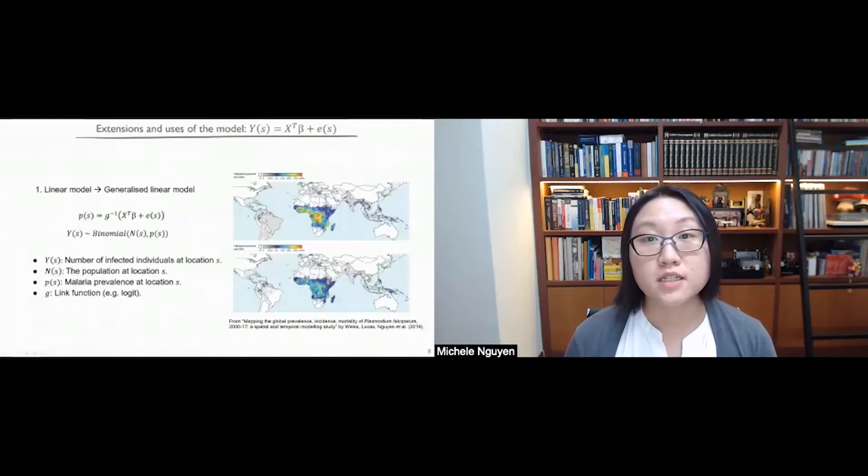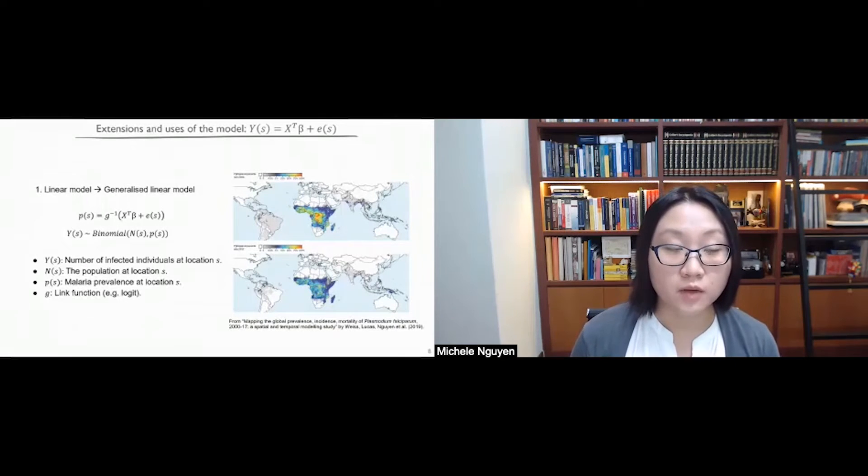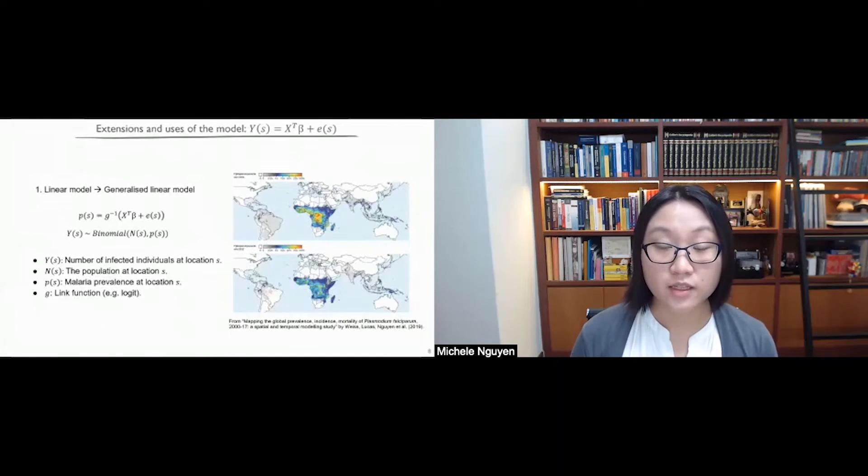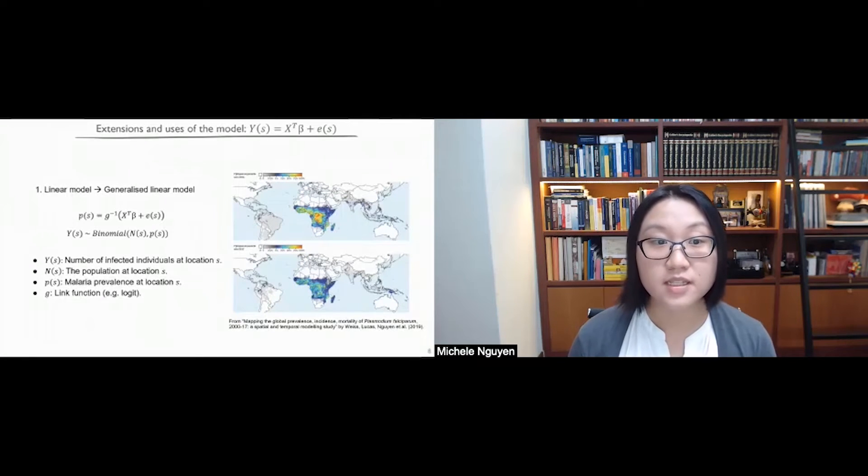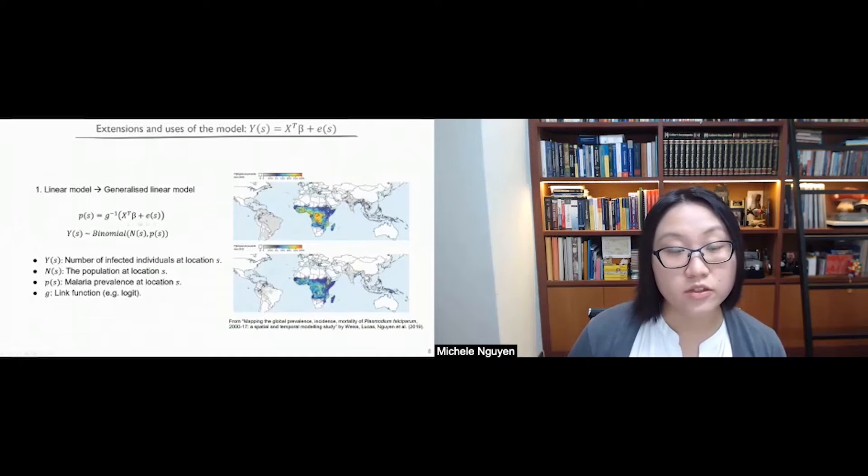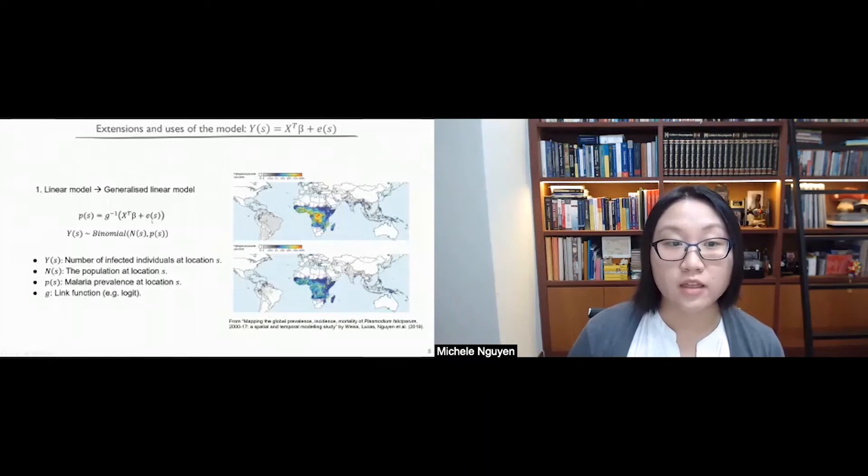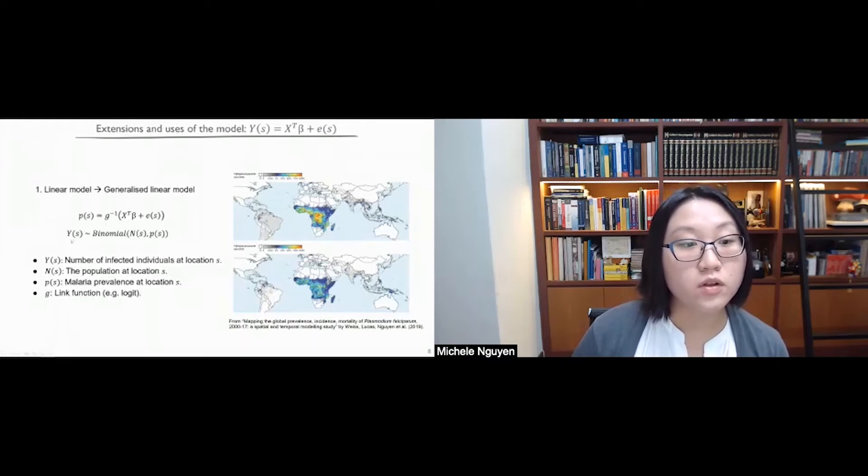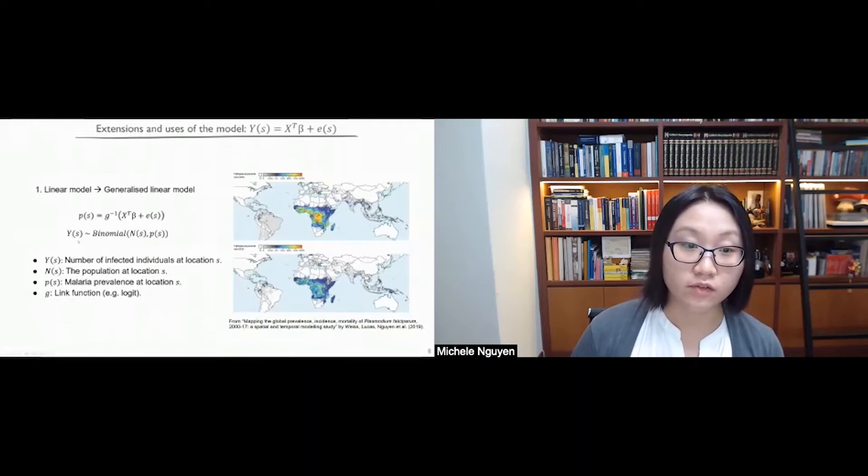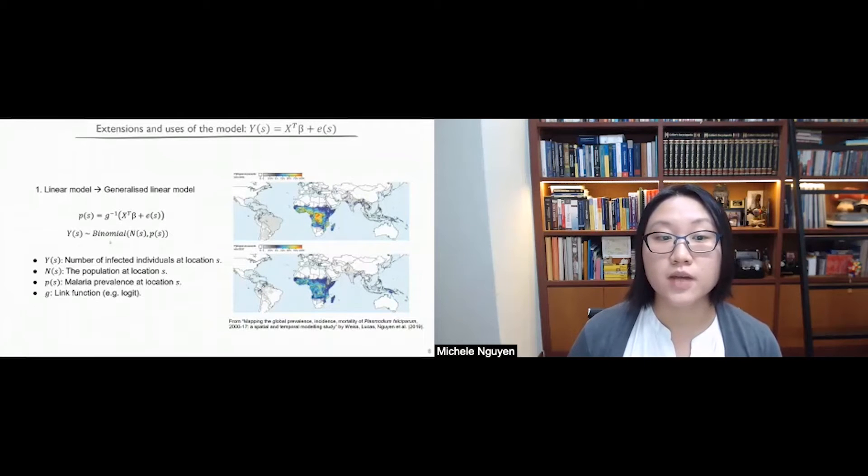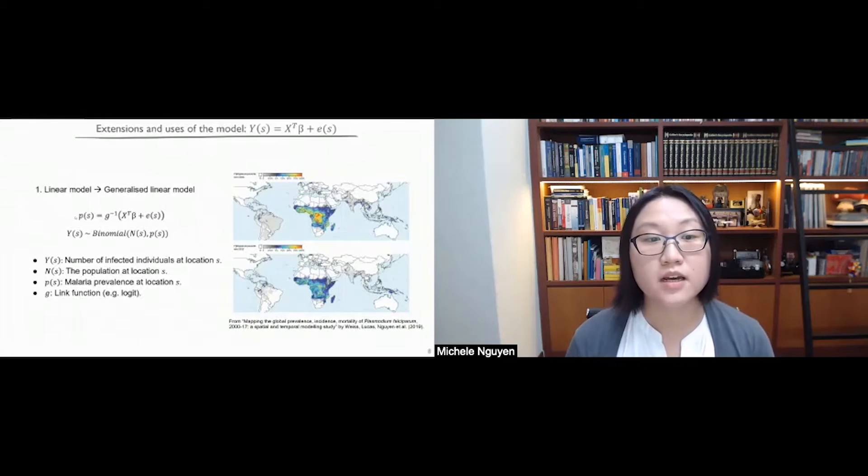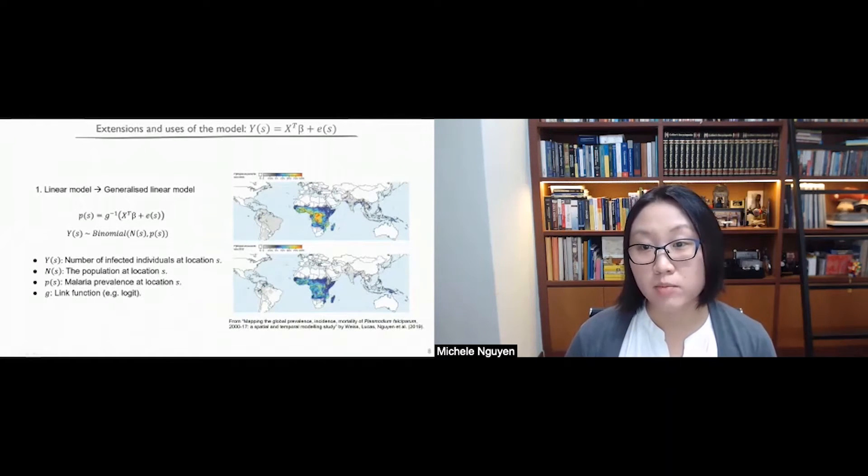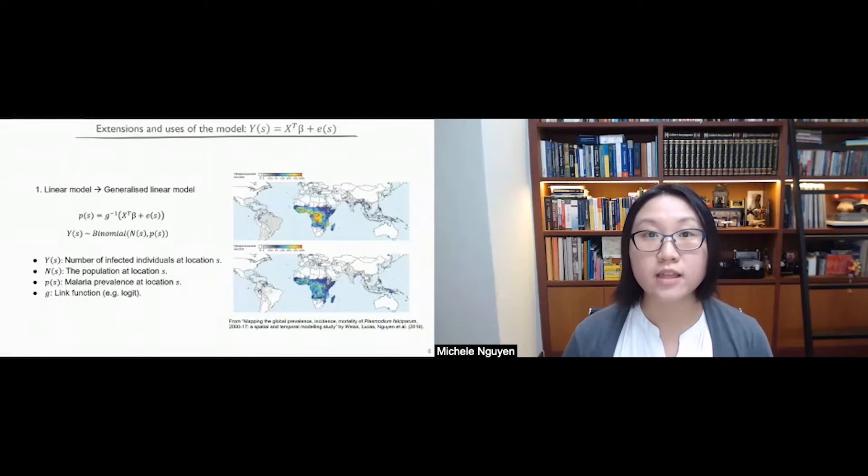So the classical geostatistical model has been used in various contexts, and it has also been extended to better suit different use cases. So one way that has been done is to change the linear model to a generalized linear one. So in the context of estimating malaria prevalence, this has been done by changing the linear predictor, which is described by x beta plus e, from the real line to the zero to one scale using a link function g. And then we can model our observations, which is typically the number of infected individuals at a particular location as a binomial distribution in order to estimate its parameters, which is then p, the prevalence. So this approach has been used in spatial epidemiology, and the results such as that seen on the right, which are maps of prevalence, have been used to track progress and to plan interventions to tackle the disease.